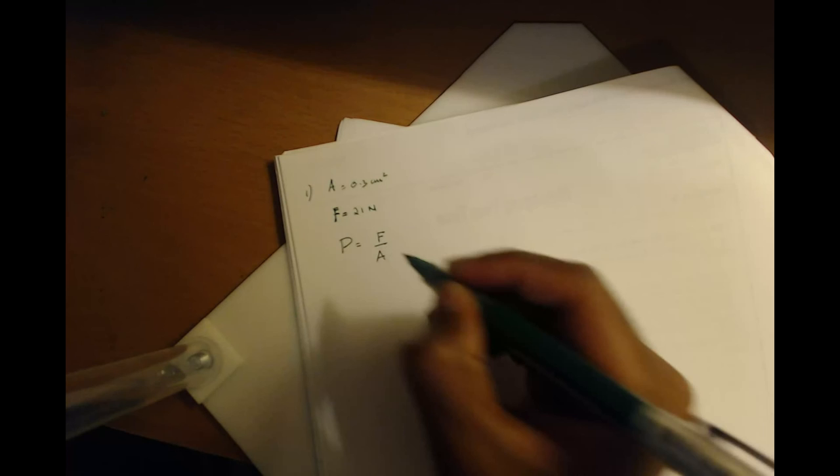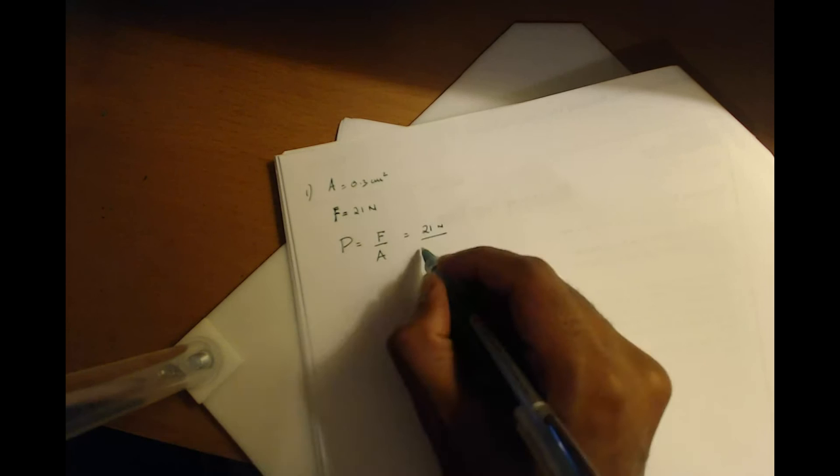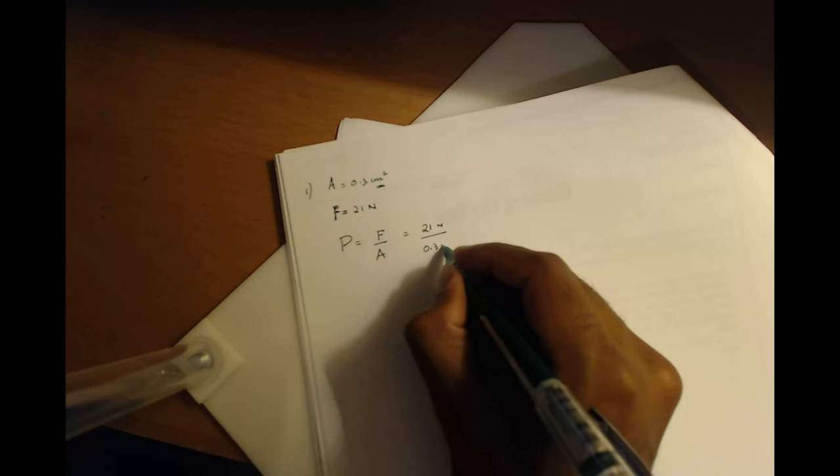It's just force per unit area. So what's our force? 21 Newtons, if you want to include the units, over area. This is the area of the chisel. It's given to us, but it's given to us in centimeters squared. So we have to convert it to meters squared.